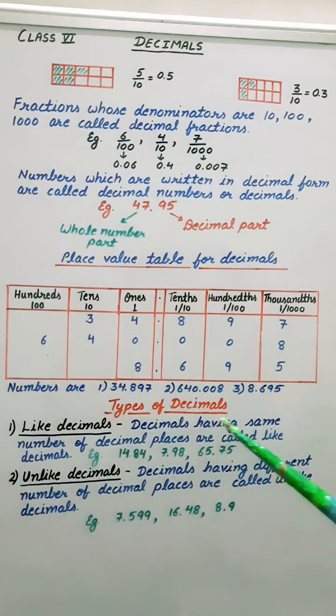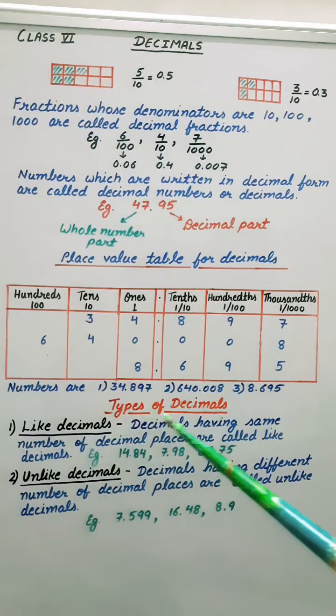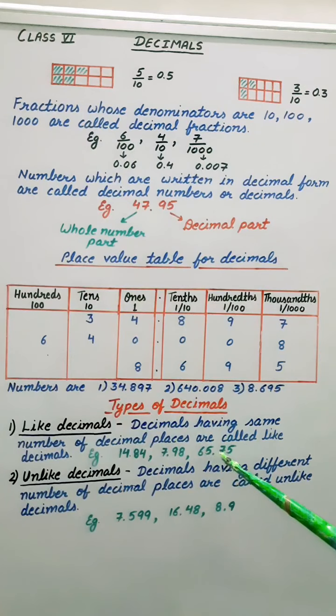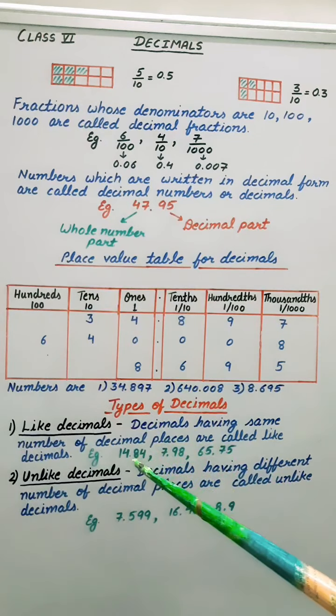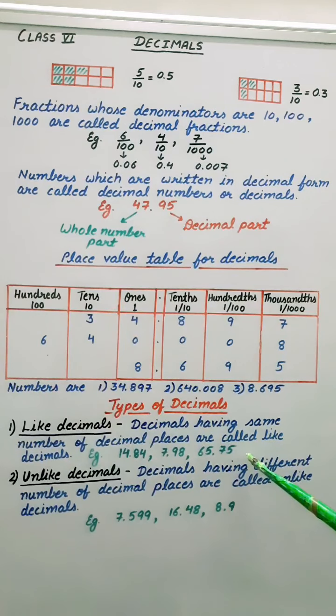Now let's see types of decimals. Number 1, like decimals. Decimals having same number of decimal places are called like decimals. So let's see some examples. 14.84, 7.98, 65.75. So after the decimal we can see number of digits are 2 only in all the 3 decimal numbers. So they are like decimals.